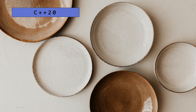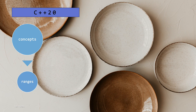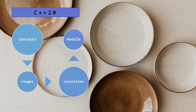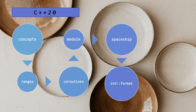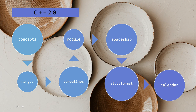Discover the strengths of C++20. Concepts, ranges, coroutines, and modules redefine your coding experience. The spaceship operator makes comparisons simpler, and modules organize your code better. Explore the flexibility of std::format and the features of the calendar and time zone library. C++20 is your path to modern, efficient, and powerful coding solutions.